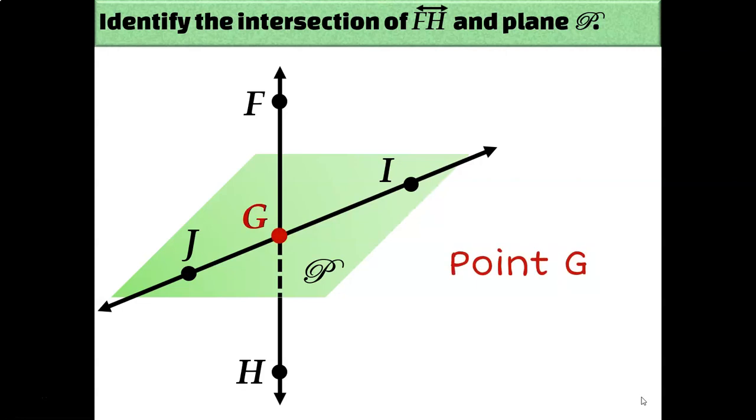You have to imagine that this is in a three-dimensional space. Plane P is two-dimensional, and then line FH is going as a vertical line up and down through the plane. It actually punctures the plane at point G. In fact, when I teach this lesson in class, I always take a piece of paper and a pencil, and I stab the pencil through the paper. That's what you have to imagine this kind of looks like is a line or a pencil going through a plane or a piece of paper. That point where the pencil goes through the paper is the point of intersection. That's the only thing that line FH and plane P have in common. That's the only place that they touch.